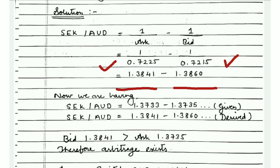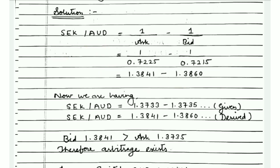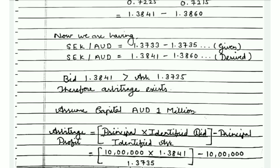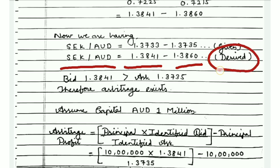After calculating, we get the SEK/AUD derived direct rate: bid = 1.3841 and ask = 1.3860. This completes our first step — conversion of the indirect rate to a direct rate. In the solution, we clearly label the original SEK/AUD rate (1.3733 / 1.3735) as 'given' and the newly calculated rate (1.3841 / 1.3860) as 'derived'.